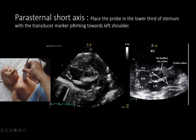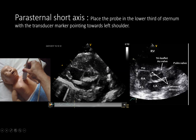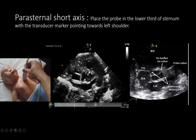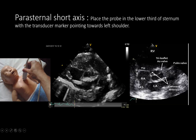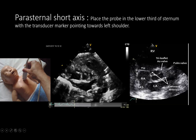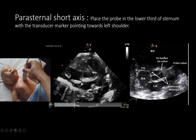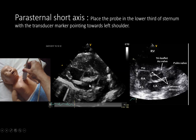To perform the parasternal short axis view, the probe is placed at the lower one-third of the sternum with the transducer marker pointing towards the left shoulder. In this view you see the aortic valve at the center, the left atrium posteriorly, and the right atrium on the right. You can visualize the catheter tip coming from the IVC into the right atrium, and assess whether it is crossing the patent foramen ovale into the left atrium.